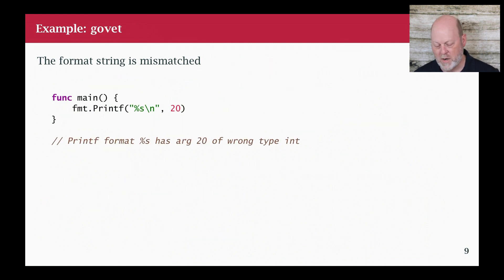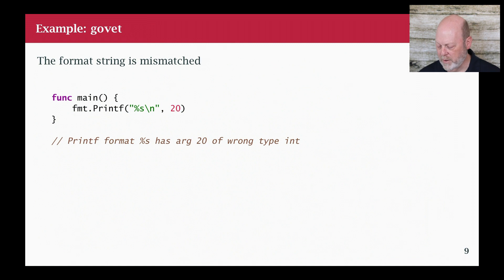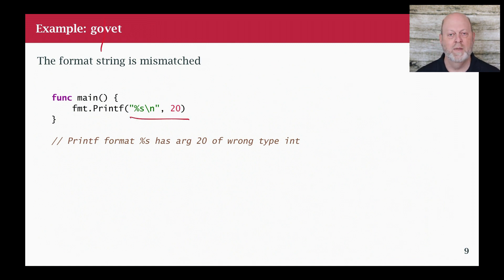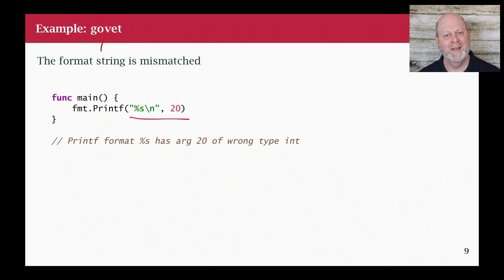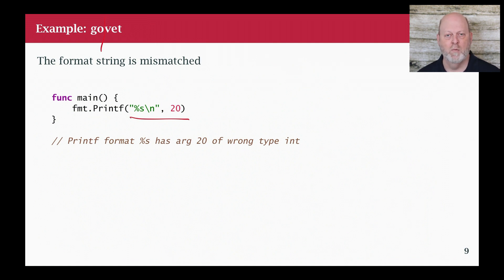Here's an example of GoVet. I'm using the value of 20 but calling printf with a percent-s for string — that's a mismatch. Something weird is going to come out. It won't crash your program like it will in C, but something weird is going to come out.